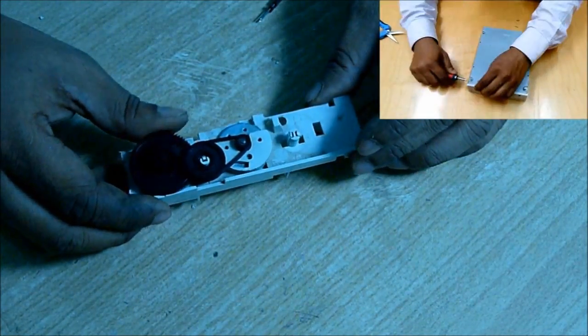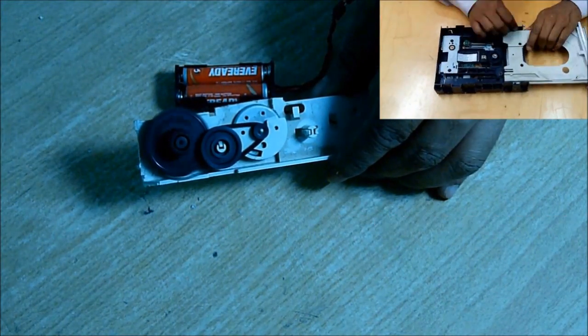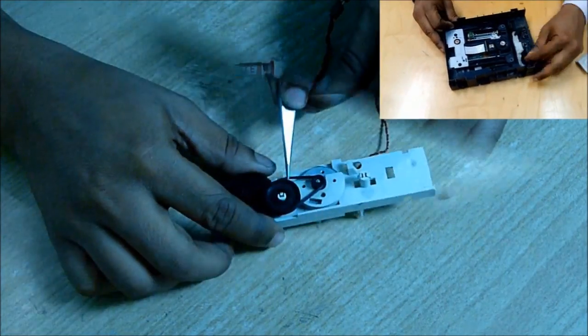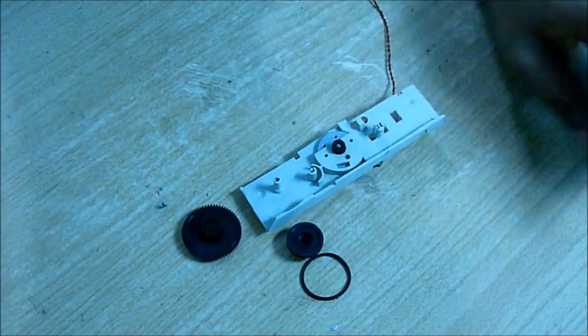You can use a servo, but I have used the door opening mechanism of an old CD player. I cut it out, then take the pulley and the rubber band out, and take that big gear out.